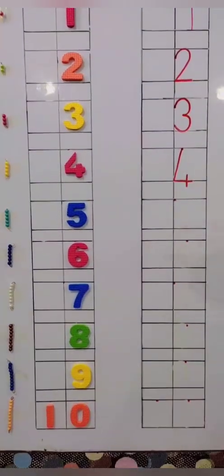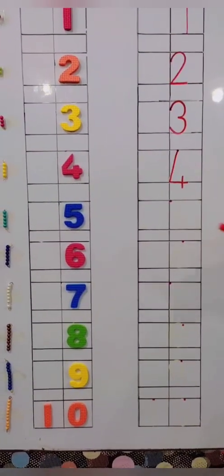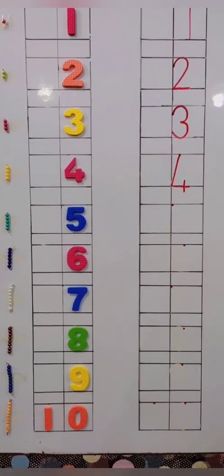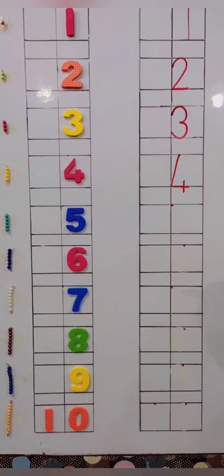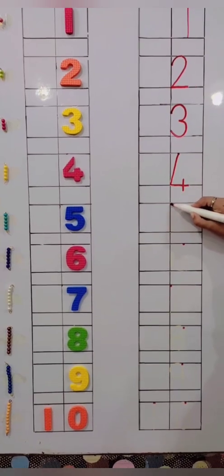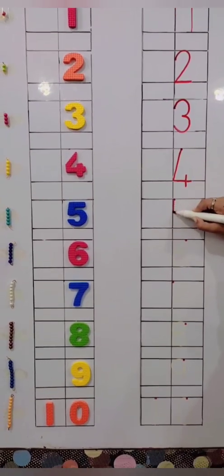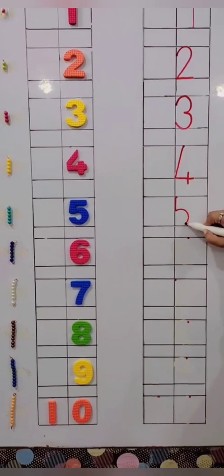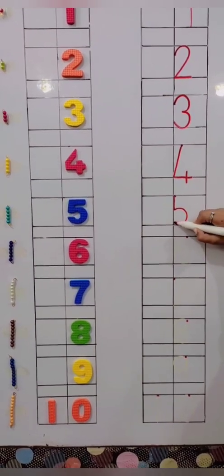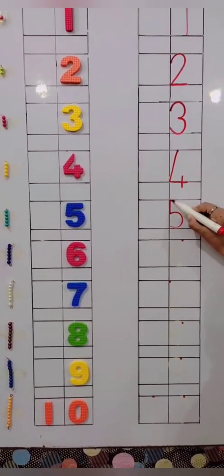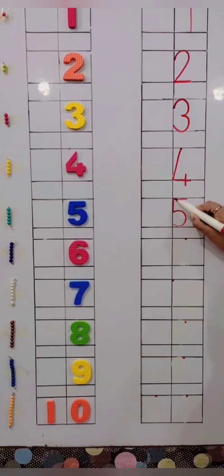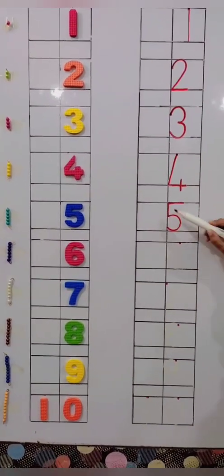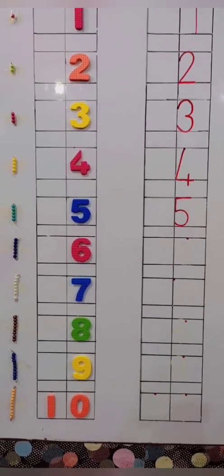What's come after 4? 5. Write with me. Put your pencil on the dot. Come down and turn around. What is the formation of 5? 5 is fat wearing a cap. 5 is fat wearing a cap.